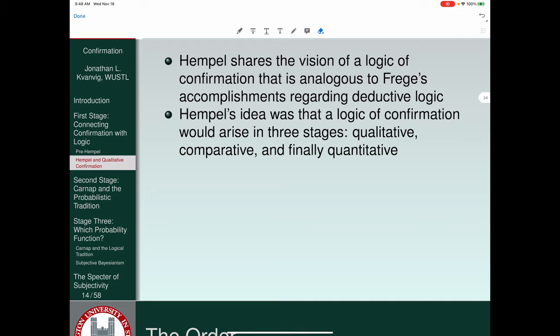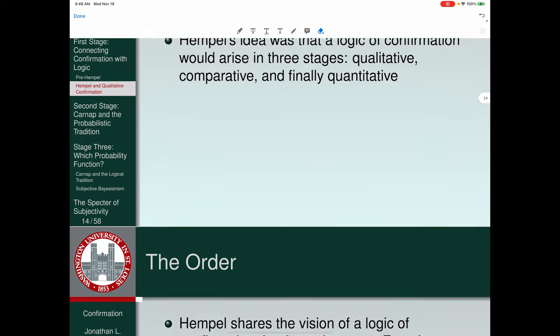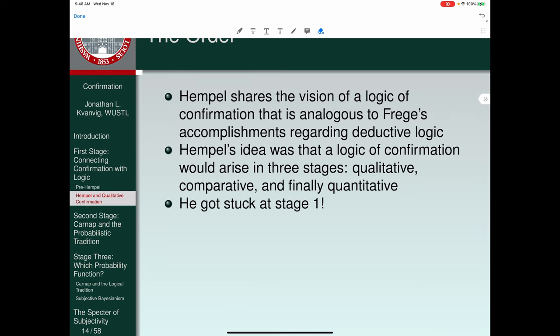His idea was that a logic of confirmation would arise in three stages. First, we get a grip on the qualitative dimension, whether a piece of information is neutral, positive, or negative with respect to a hypothesis. Then we move from that to comparative, where we get to say, we've got two pieces of information. Does one of them confirm the hypothesis more than the other? That's the comparative stage. And then finally, we end up getting to the quantitative stage where we can attach a precise degree of measure on how much confirmation is generated by a piece of information for a hypothesis. The problem is, Hempel got stuck at stage one.